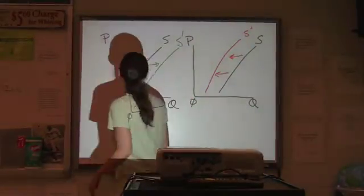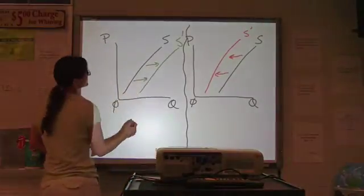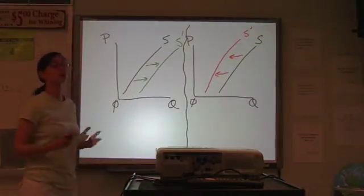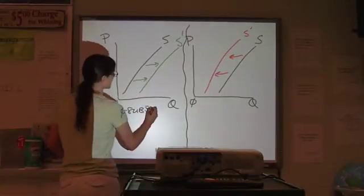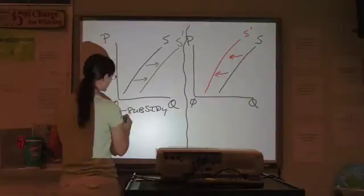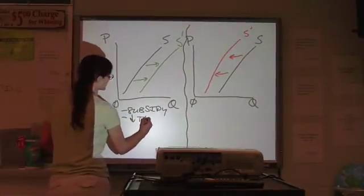Okay, so over here we're looking at things that can increase supply. We already said that a government subsidy is one of those factors, because a subsidy makes it easier for you to produce. If we cut taxes, that's another one. Lower taxes.